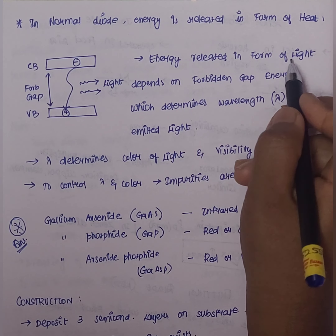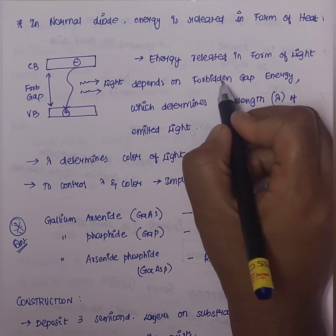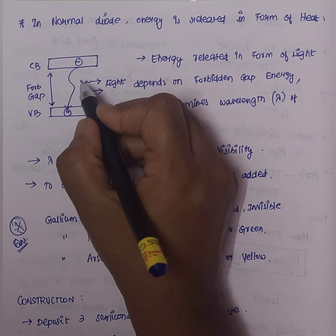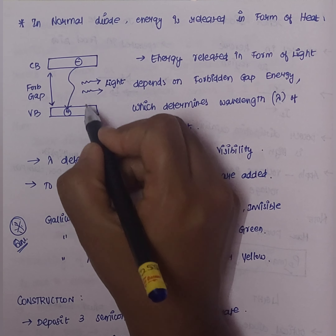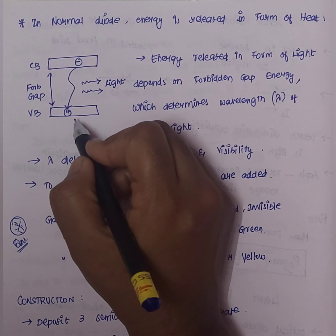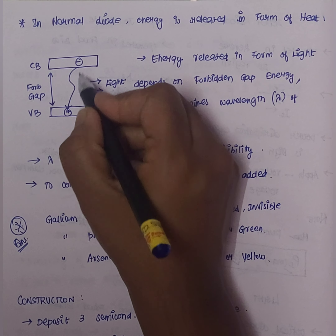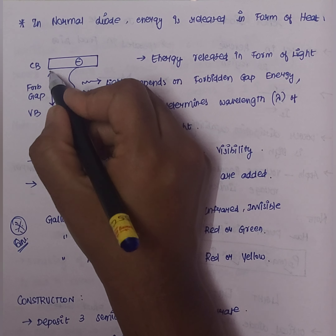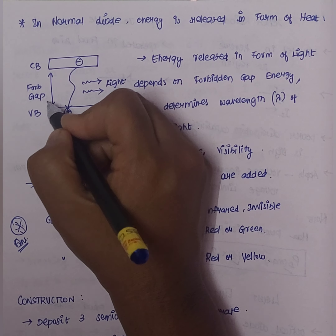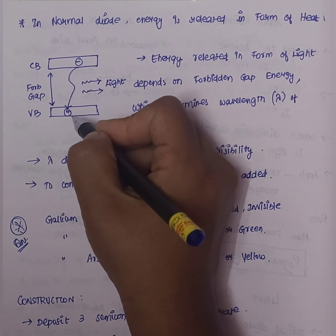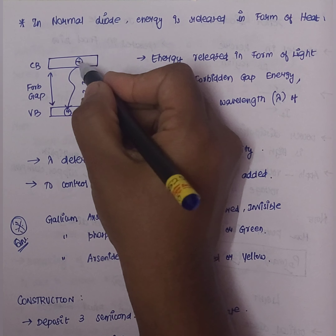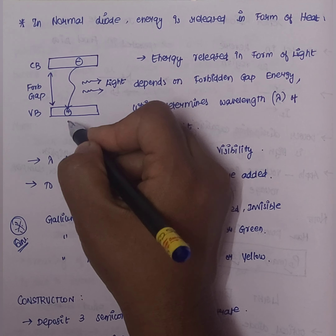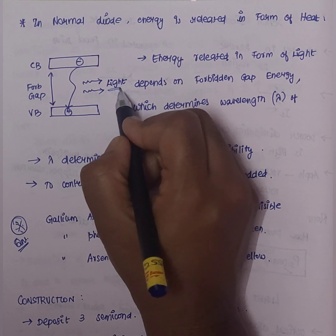The energy released in the form of light depends on the energy gap. So the light energy is released based on this energy gap. Looking at the valence band, this light is emitted.